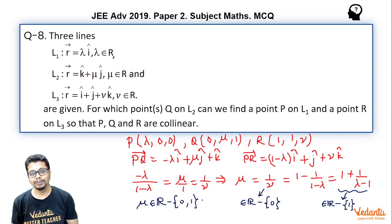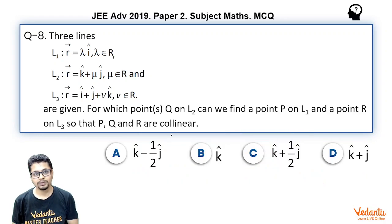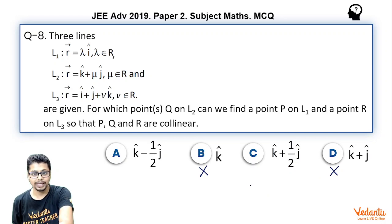So that means when mu is 0 and when mu is 1, those Q points would not be my answer. So as we see options, when mu is 0 I get k cap. This is not my answer. When mu is 1, I get k cap plus j cap. This is not my answer. So that means my answer should be A and C.